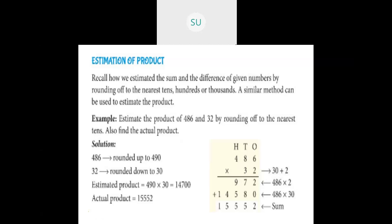Now finding the actual product, we multiply 486 by 32 using the normal multiplication method and get 15,552. So the actual product is 15,552 and the estimated product is 14,700.